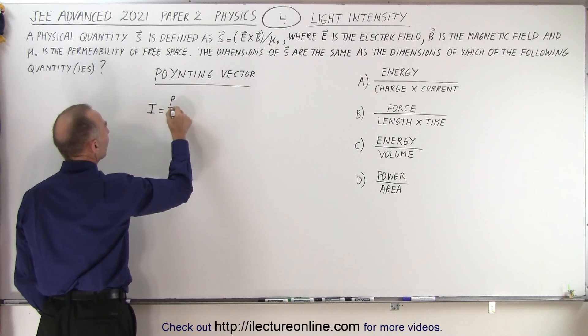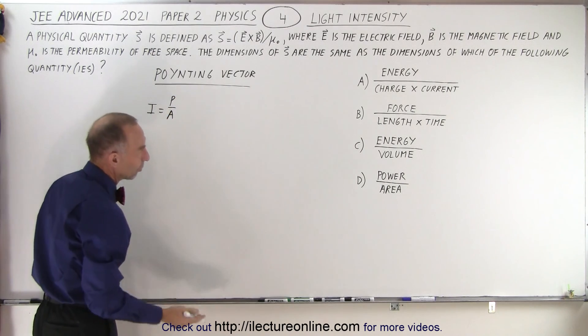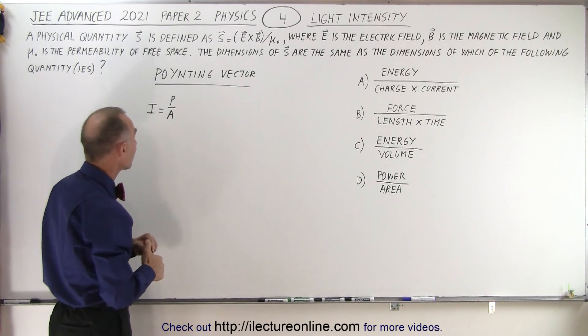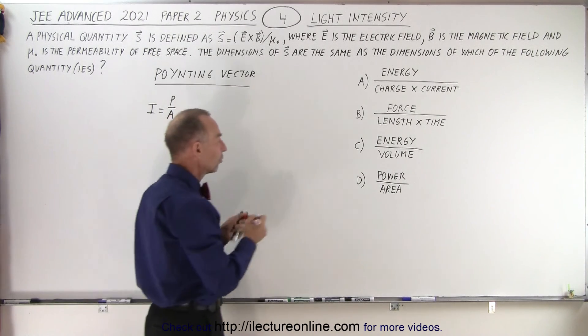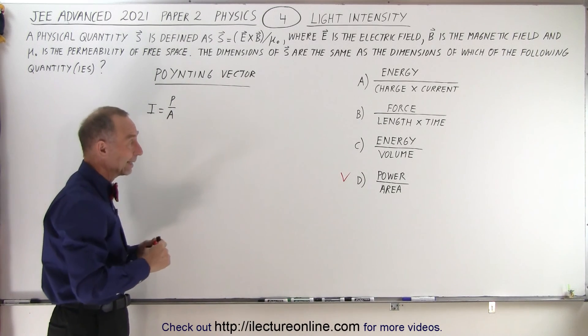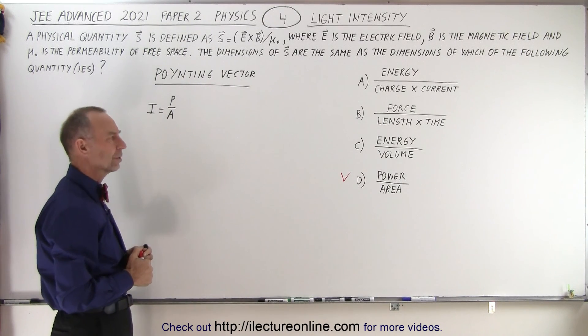So when we take a look at the possibilities, right away we see that D is indeed power over area, so you know that D matches the proper units for the Poynting vector, the light intensity. But what about the others?